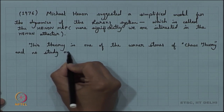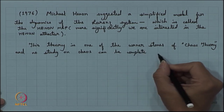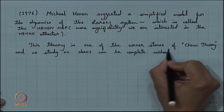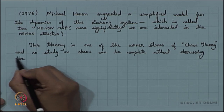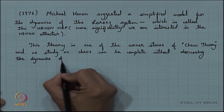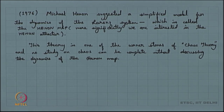No study on chaos can be complete without discussing the dynamics of the Hennon map. This is a two-dimensional mathematical model which gives rise to many interesting dynamics. It is also a parameterized family with two parameters, and for different values of parameters you get different dynamics.